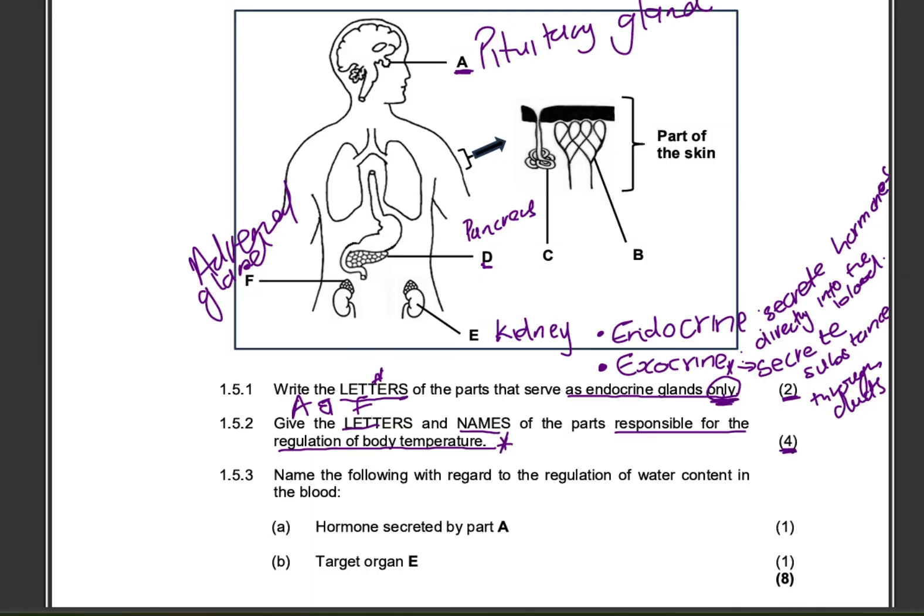For the question about endocrine glands, I also need to indicate how it would be marked. It would be one mark for A and one mark for F.